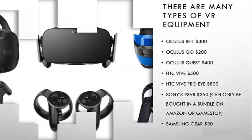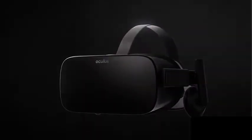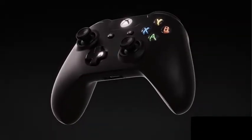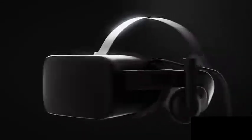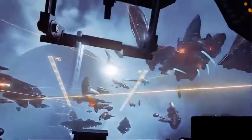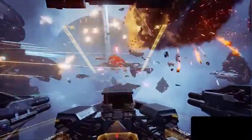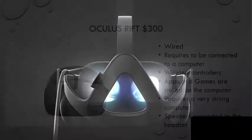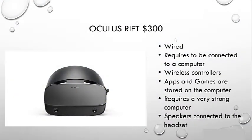We're going to go over all of the virtual reality equipment and then at the end we'll cover what we have at the Cybrarium. Beginning with probably the most well-known company, we have the Oculus Rift. This is a wired headset that has to be connected to a computer. The controllers are wireless 90% of the time, and all of the apps, games, and experiences are stored on your computer. It requires a strong computer and the speakers are connected to the headset.